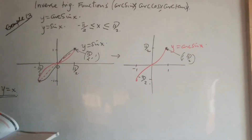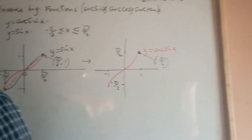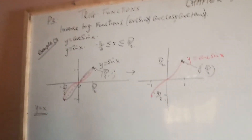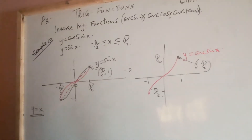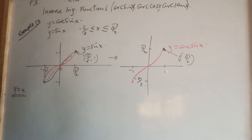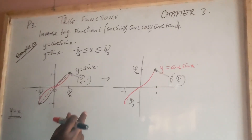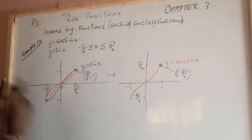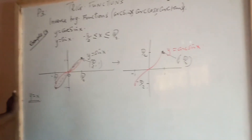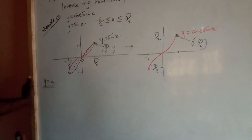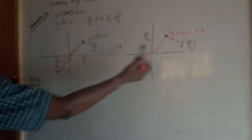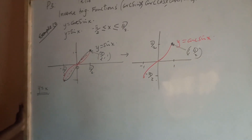If you wish to sketch the graph of y equals arc cos x or y equals arc tan x, the same procedure applies. Make sure to use only the part of the original graph that obeys one-to-one mapping. In my next video I'll show how to sketch the graphs of y equals arc cos x together with y equals arc tan x. For now, this is the graph of y equals arc sine x.